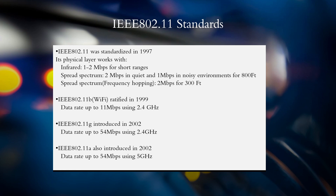IEEE 802.11g, introduced in 2002, transmits data at a theoretical rate of 54 megabit per second using a 2.4 gigahertz frequency. Also introduced in 2002 was IEEE 802.11a, which is capable of providing a data rate of 54 megabit per second using a 5 gigahertz frequency.